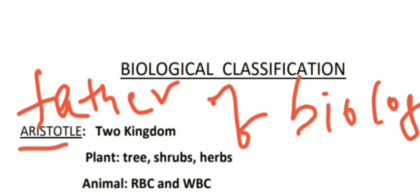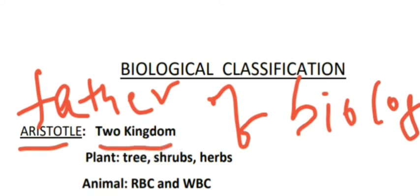Aristotle divided organisms into two kingdoms. The first is the plant kingdom and the second is the animal kingdom.